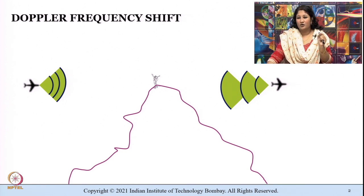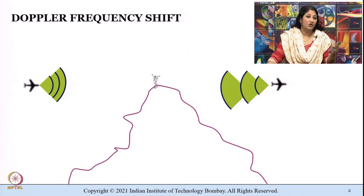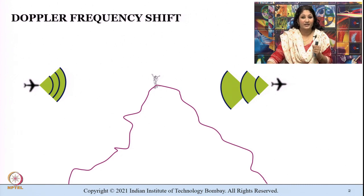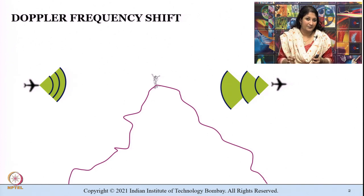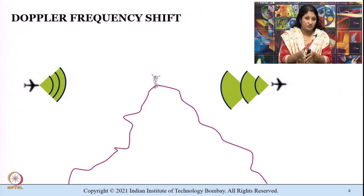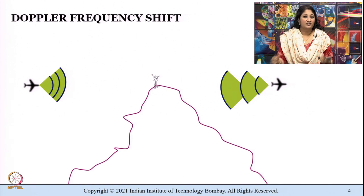Remember, this can also be observed when a listener is moving either toward or away from a sound source — either way. The Doppler effect is named after the Austrian physicist and mathematician Christian Doppler, who was the first to describe this effect in the 19th century. A shift in frequency observed when either an observer is moving towards a sound source or a sound source is moving towards an observer is known as Doppler shift.